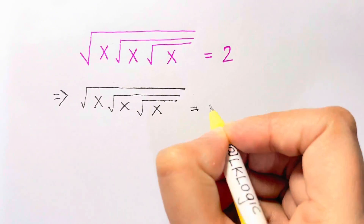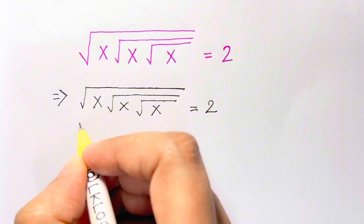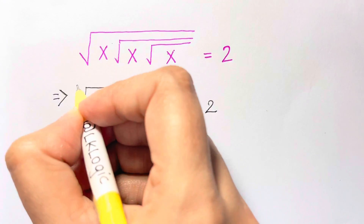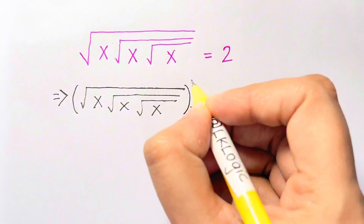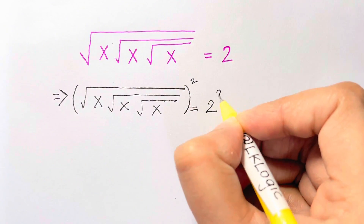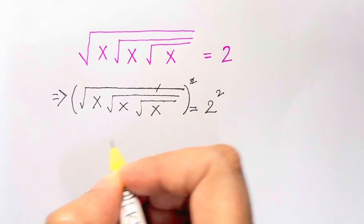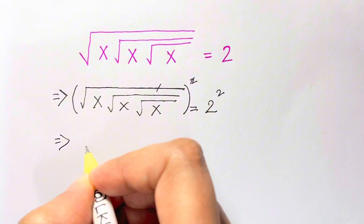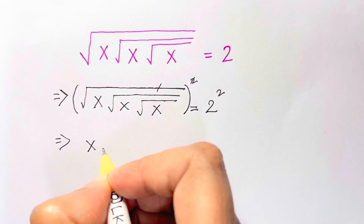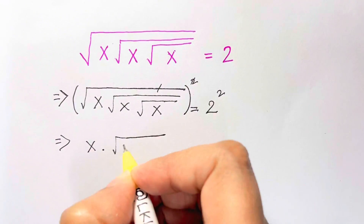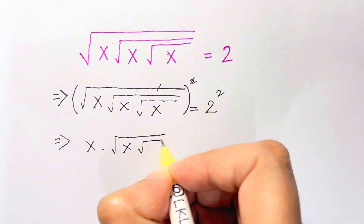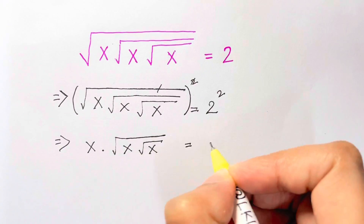The first step is we square both sides. As you can see, the square root and square get cancelled, so we are left with x times the square root of x, root of x again.